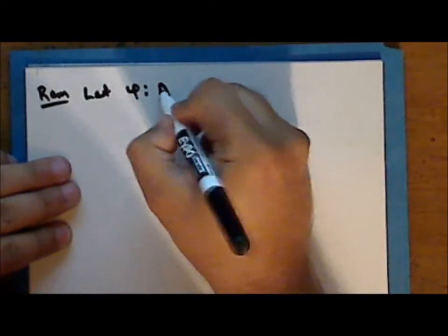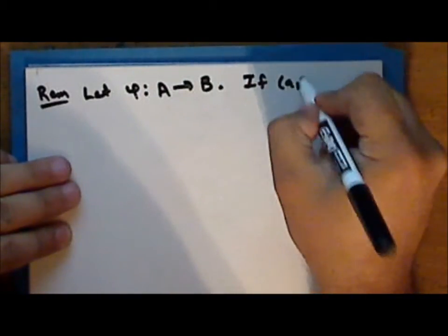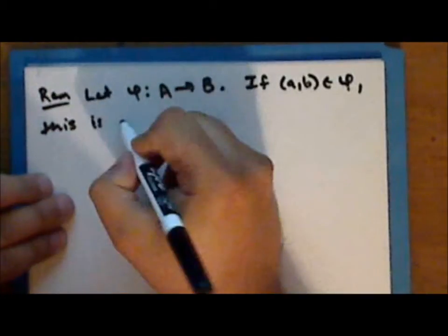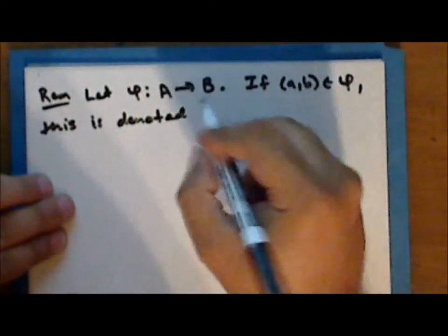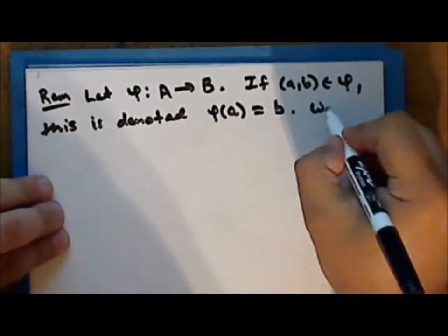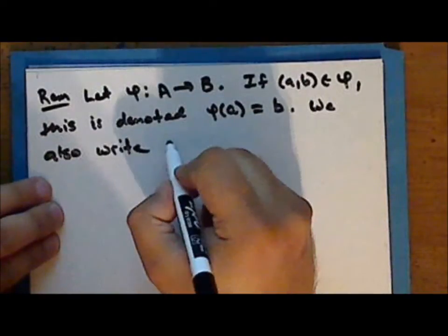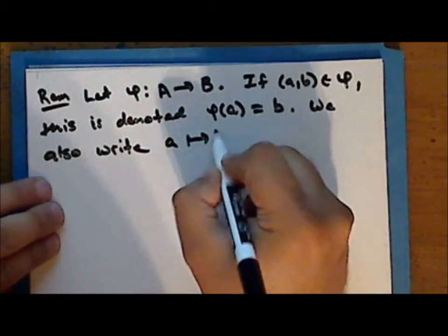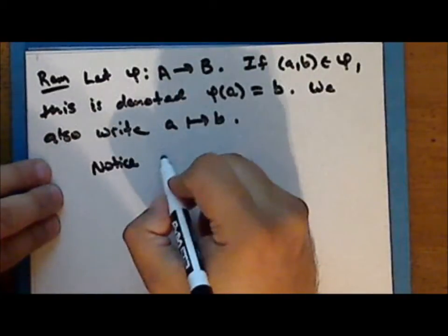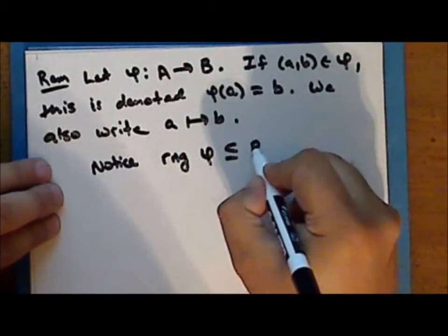Let phi be a function from the set A into the set B. If the ordered pair AB is in this function, this is denoted using functional notation as F of A is equal to B. We can also write that the element A is mapped into the element B. Notice that the range of the function phi is a subset of the codomain B.